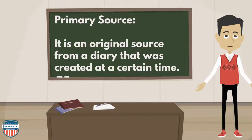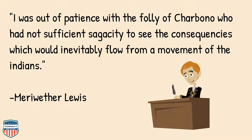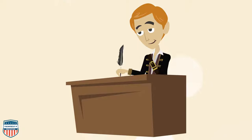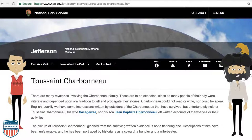Meriwether Lewis also provided a first-hand account — a primary source — about Toussaint Charbonneau. In his diary he wrote: 'I was out of patience with the folly of Charbonneau, who had not sufficient sagacity to see the consequences which would inevitably flow from a movement of the Indians.' Here's a really good example of a secondary source: the National Park Service has looked at many primary sources and constructed their own narrative.